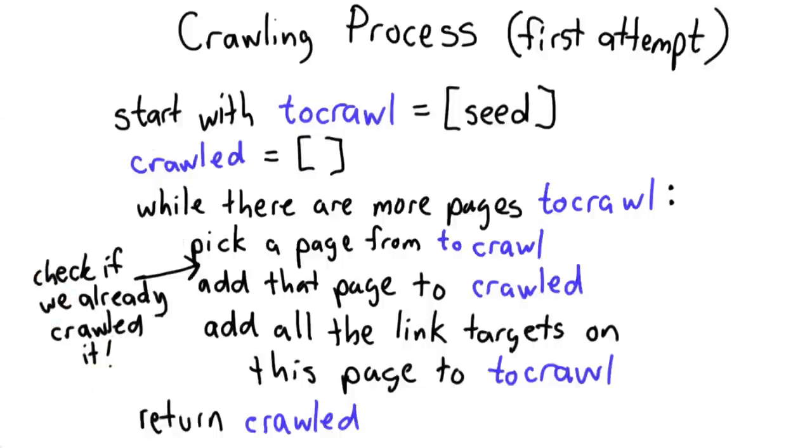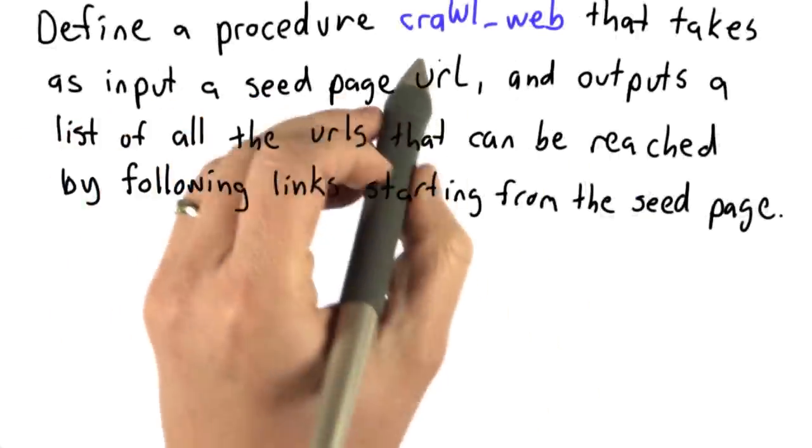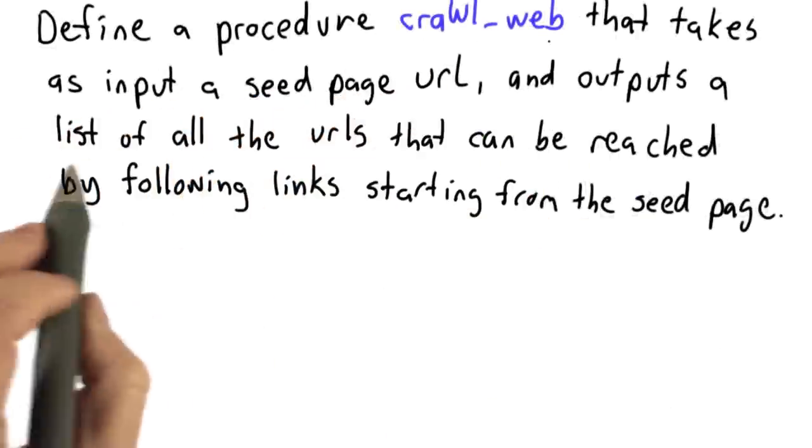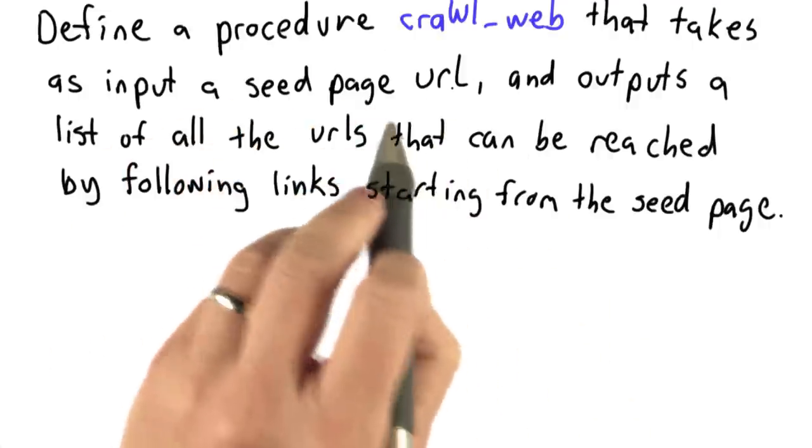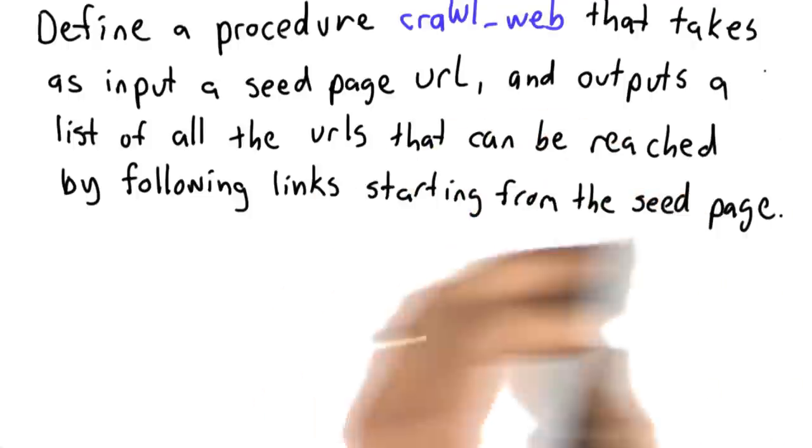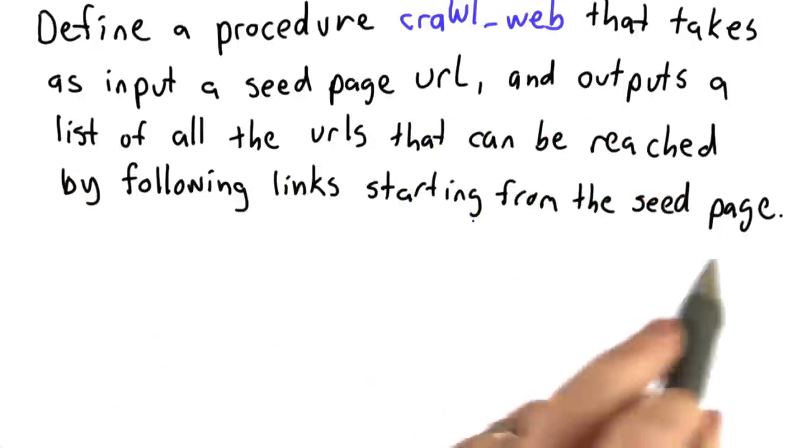Now we're ready to write the code for crawling the web. Our goal is to define a procedure called crawl-web that takes as input a seed page URL and outputs a list of all the URLs that can be reached by following links starting from the seed page.